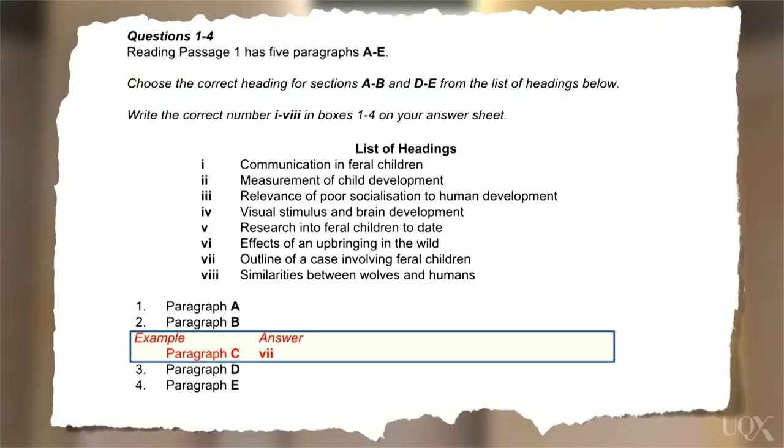As you can see in this example, the reading passage has five paragraphs. You need to choose the correct heading for each paragraph from the list of headings. There are eight headings, so you don't need to use all of them. As you will also notice, there is an example heading given for paragraph C.